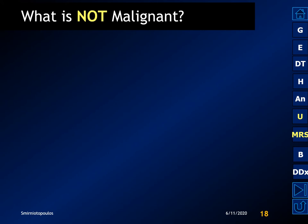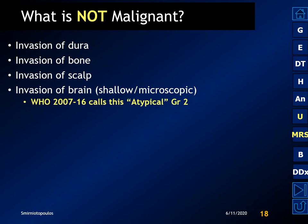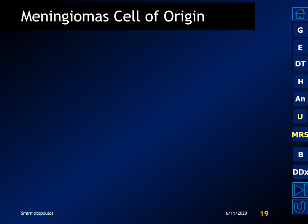What is not malignant for meningioma? Invasion of the dura is not malignant. Invasion of bone is not malignant. Invasion of the scalp is not malignant. But invasion of the brain is going to cause the pathologist to upgrade the tumor to WHO grade 2, or atypical, meningioma.